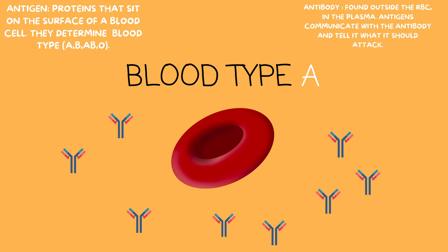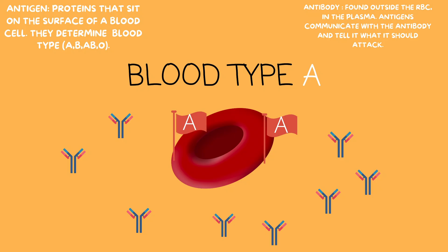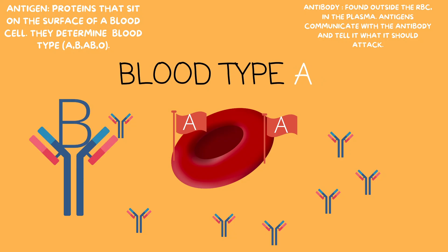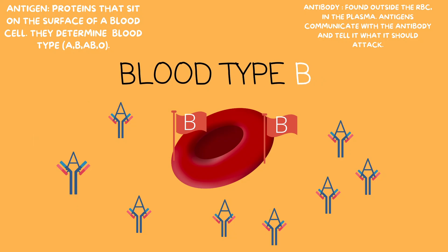For example, if we have blood type A, the antigen is A and this antigen will tell the antibody to fight off any B antigens. If we have a B antigen — represented here with a flag with a B on it — that means this red blood cell is compatible with B. So it won't fight off anything else with B, but it will fight off anything with an A. The antigen tells the antibody: if any A's come around, fight them off; if any B's come around, they're perfectly okay. So here B is our antigen and A is our antibody.